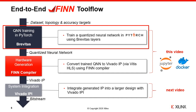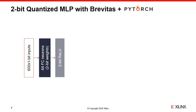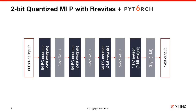Let us proceed with the first step, which is to train a quantized network with Brevitas, our PyTorch library for quantization-aware training. In this demo, we'll be using a multilayer perceptron with three hidden layers and two-bit quantized weights and activations to reduce the compute cost. We'll feed the input vector with 600 binary elements into a fully connected layer of 64 neurons with two-bit quantized weights and a two-bit ReLU activation function, then repeat the same structure twice to obtain a total of three fully connected hidden layers. Finally, we'll use a single neuron whose output is quantized to a binary value. We'll also use standard PyTorch batch norm and dropout layers before the activations to help the network converge faster and overfit less, though these aren't shown in the figure for brevity.